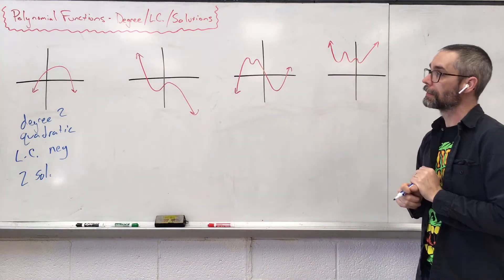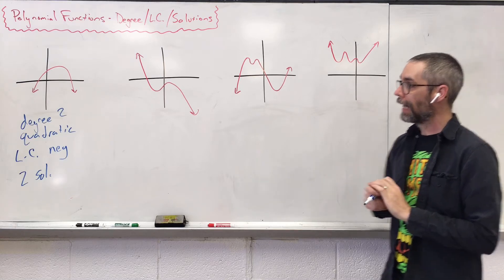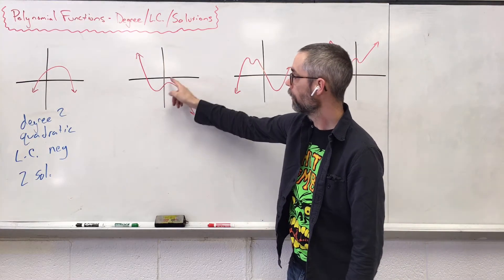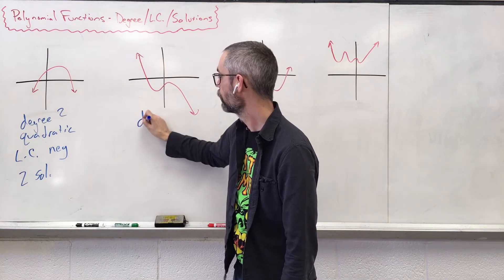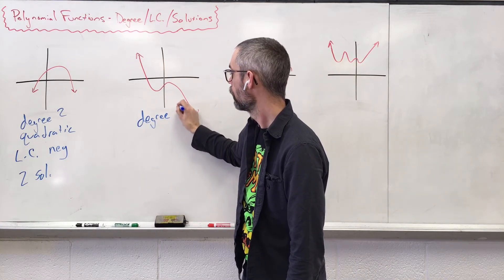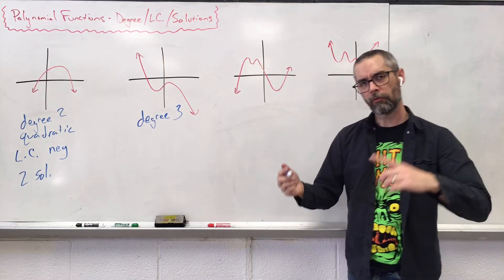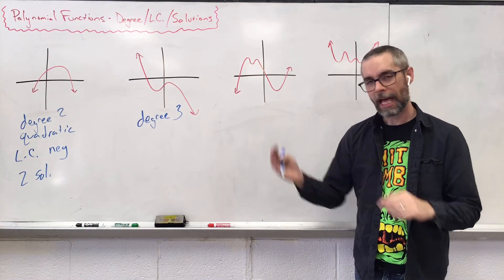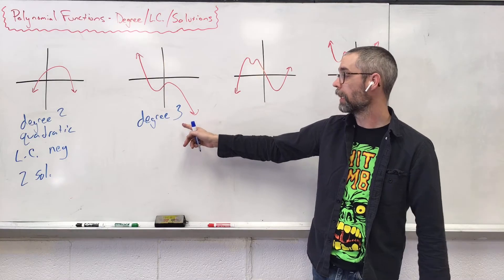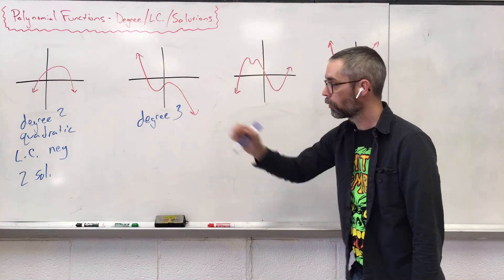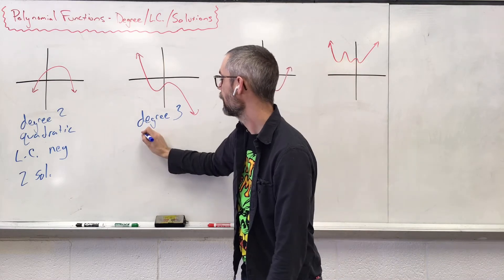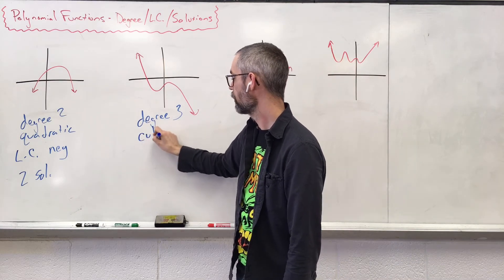Let's take a look at this next one. I see I have one, two turns in my graph, meaning I should have a degree three. Remember, there's a relationship between how many times a graph turns versus the degree. Degree is always gonna be one more than the turns. Something with a degree three, we can call that cubic.